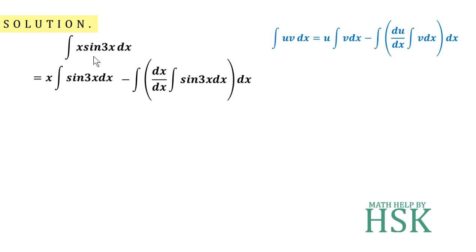Now, it should be noted that we have assumed x as the first function. This is because if we assume sin(3x) as the first function, we would differentiate sin(3x) to get 3cos(3x), and integrating x would give x²/2.